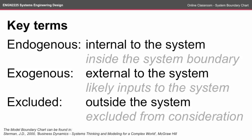The key terms in this topic are: endogenous, which is internal to the system — these are things that you would put inside your system boundary; exogenous, which are things that are external to the system, likely to be the inputs to your particular system; and excluded, which are things outside the system that you're excluding from consideration, often referred to as things outside the scope of your solution.